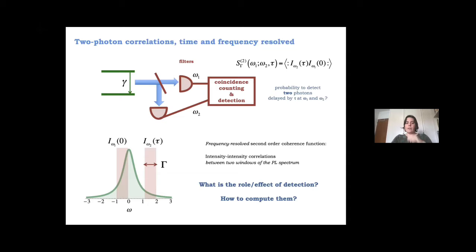In the frequency-resolved second-order coherence function, the precision in time measurement comes as the inverse of the frequency precision gamma, due to the Heisenberg uncertainty relation between frequency and time. So gamma represents the precision in measuring frequency, and its inverse represents the precision in measuring time. You cannot know both simultaneously — there is a Heisenberg uncertainty between them.